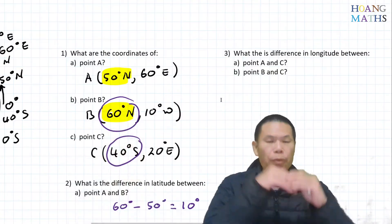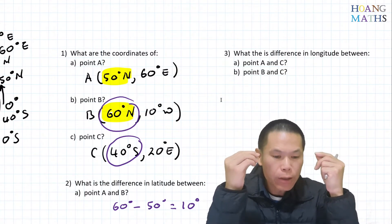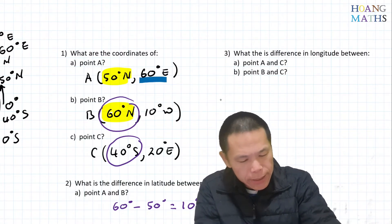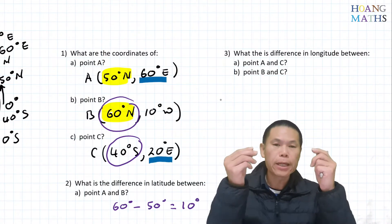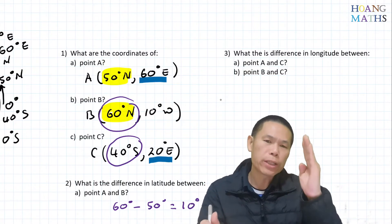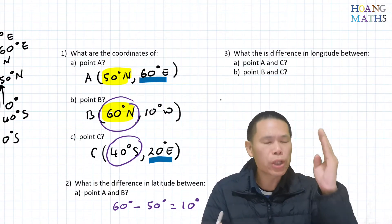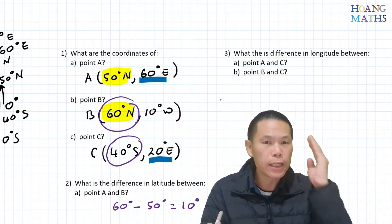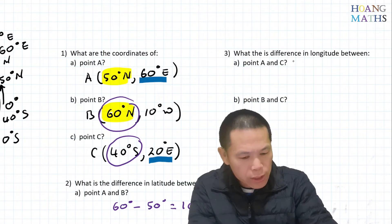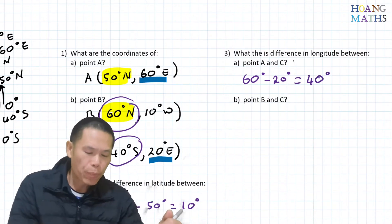Third question: what is the difference in longitude between A and C? The longitude for point A is 60 degrees east and point C is 20 degrees east — both are east of the Greenwich meridian, so we subtract. From 20 degrees east, another 40 degrees gets you to 60 degrees east, so the difference is 40 degrees. We write 60 minus 20 equals 40 degrees.